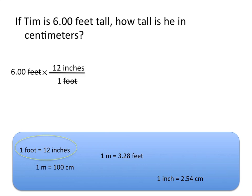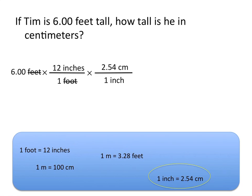That means we'll need to use another conversion factor. Just like before, I can set up my conversion factor with inches on the bottom because I want inches to cancel out. Looking at the conversion factors available, I can see that 1 inch is equal to 2.54 centimeters. Because inches is already written on the bottom, I know that 2.54 centimeters must go on the top. This allows me to cancel out the units of inches, and I'm left with units of centimeters. So to finish solving the problem, I'll start with 6 and multiply by every number on the top, then divide by every number on the bottom. This gives me an answer of 183 centimeters.